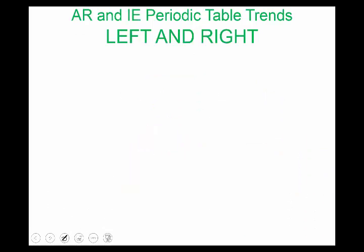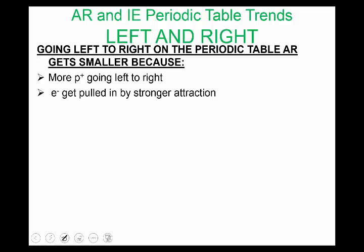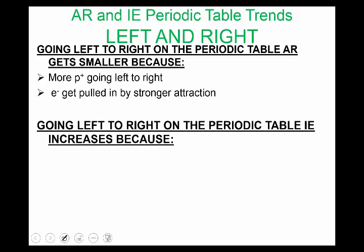So I have those, kind of what I've been saying, summarized on this slide. So going left to right, here's what's happening. You get more protons, electrons get pulled in by stronger attraction, and that explains the atomic radius trend.